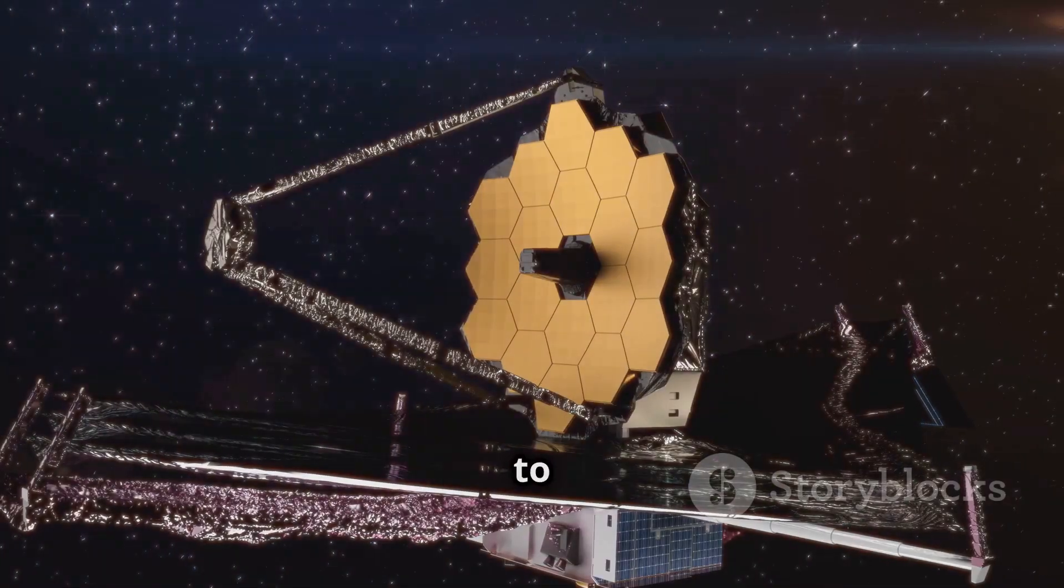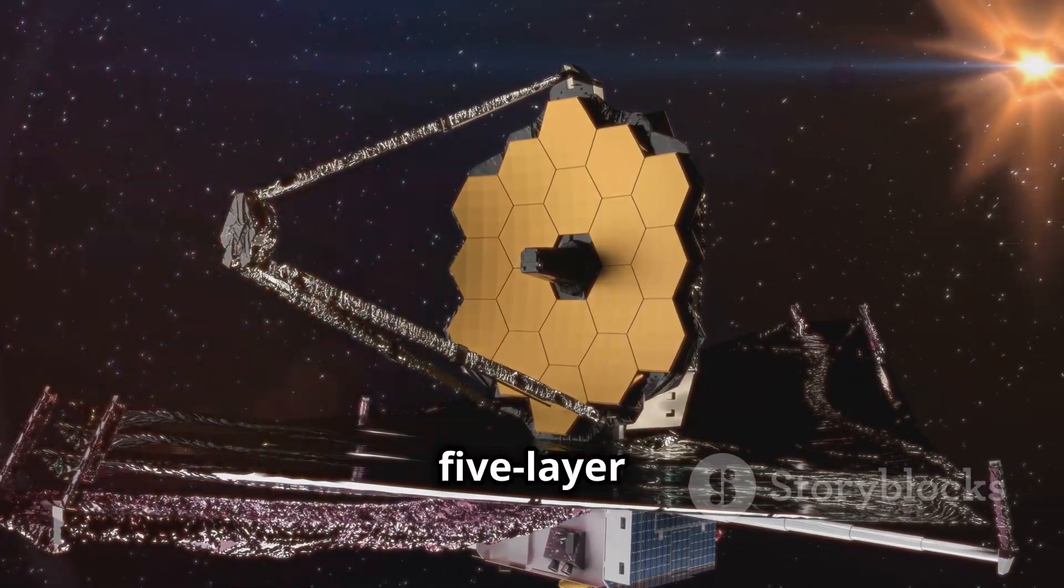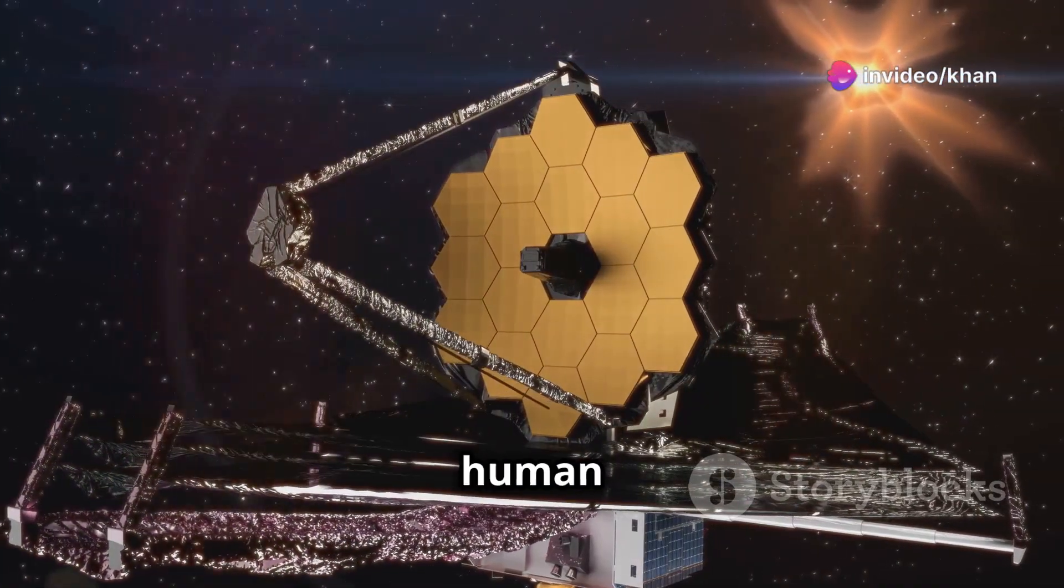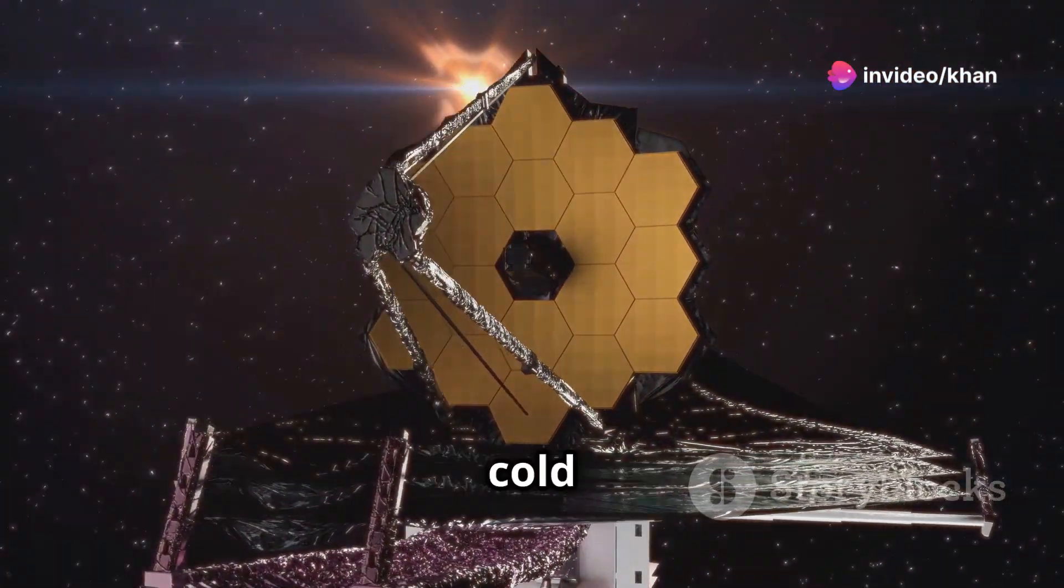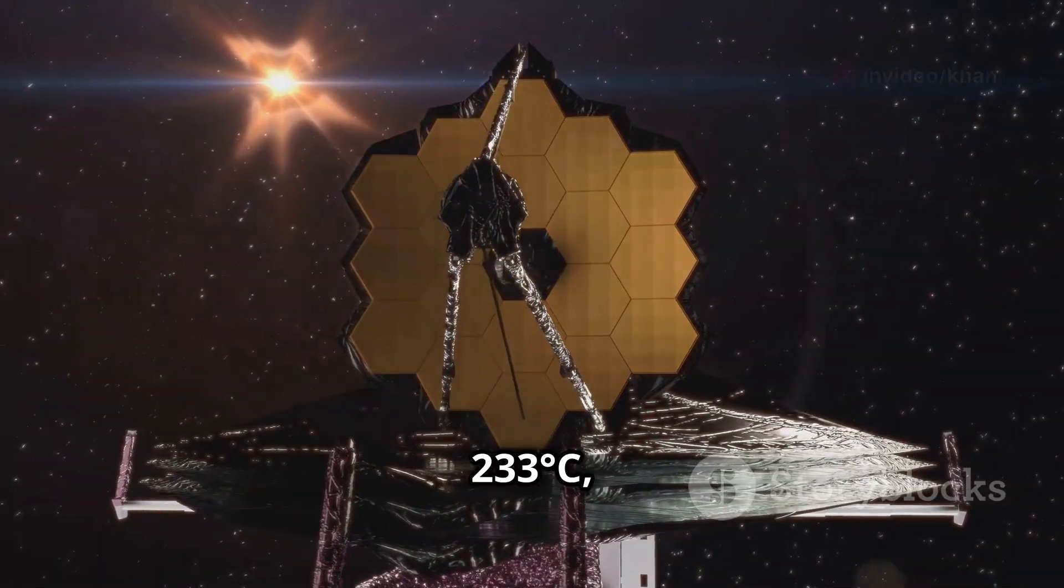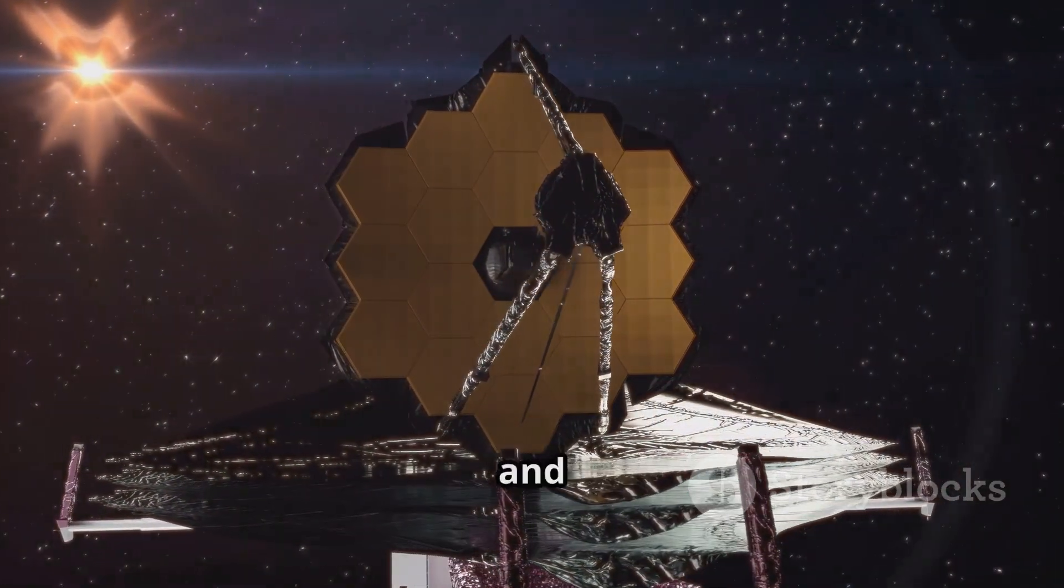To remain sensitive to faint heat signals, Webb is protected by a five-layer sunshield, each as thin as a human hair. This shield keeps the telescope at an astonishingly cold minus 233 degrees Celsius, blocking heat from the sun and Earth.